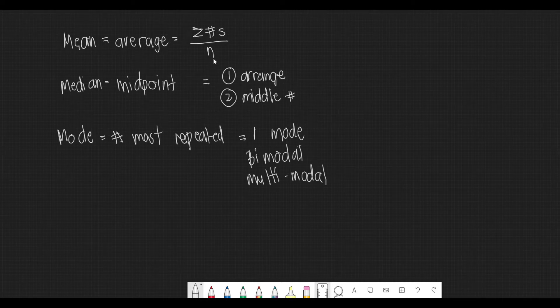For the median, that is the midpoint. To compute for that, we need to arrange the data in the given set from least to greatest, or from greatest to least. Based on what we can observe, the middle number is the midpoint, or the median. But what if there are two numbers in the middle? We just need to compute the average of the two numbers.